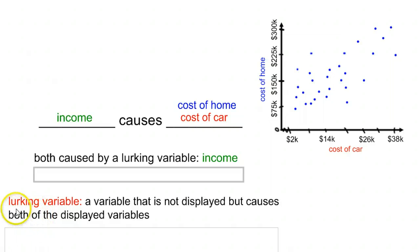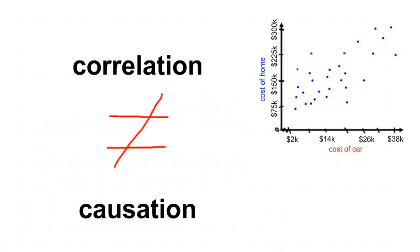And just a quick vocab again, a lurking variable is a variable that is not displayed, something you don't see on the graph, but causes both of the displayed variables. Income is the cause of both of these things. So again, just to reiterate, correlation does not equal causation. Just because there is a pattern here, just because these two things are clearly related to one another, does not mean that one of them is the reason for the other. One of them does not necessarily cause the other.